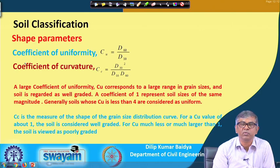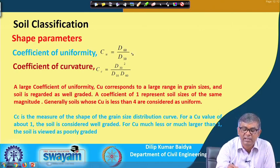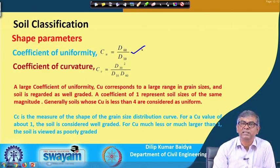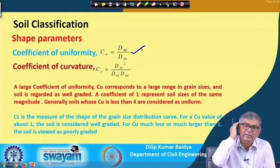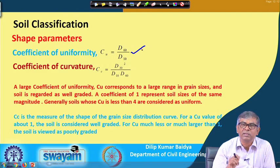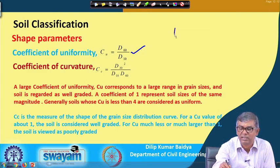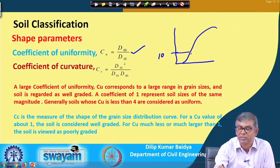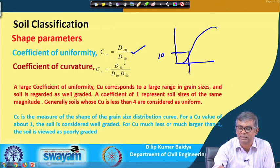When we draw the grain size distribution curve, based on that we compute two coefficients. One is the coefficient of uniformity, which is defined as D60 divided by D10. What is D60 and what is D10? D10 is the diameter corresponding to 10 percent finer.